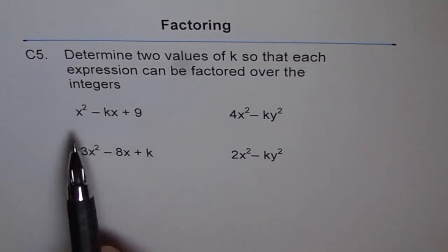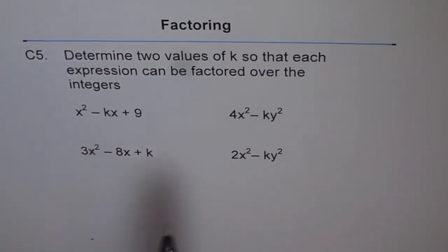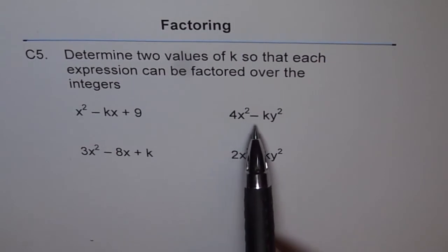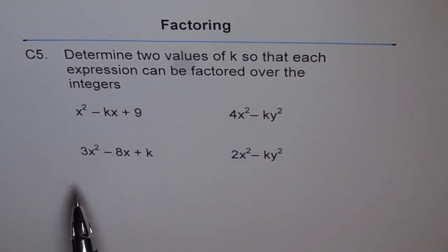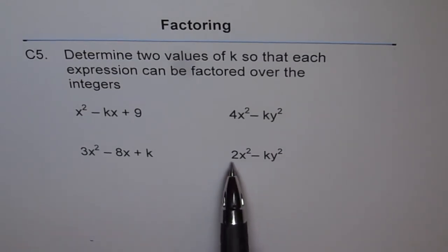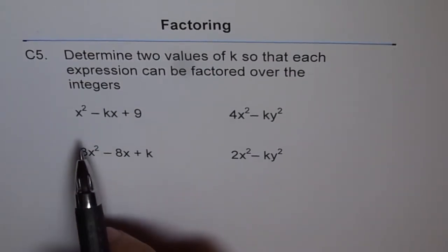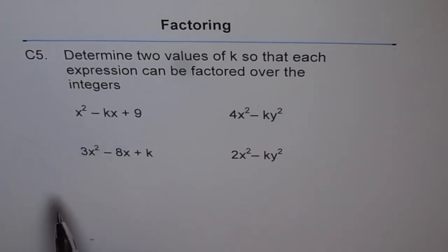The first one is x square minus kx plus 9. The second is 4x square minus ky square. Third one is 3x square minus 8x plus k. And the fourth one is 2x square minus ky square. You need to find two values for k so that this can be factored using integers.